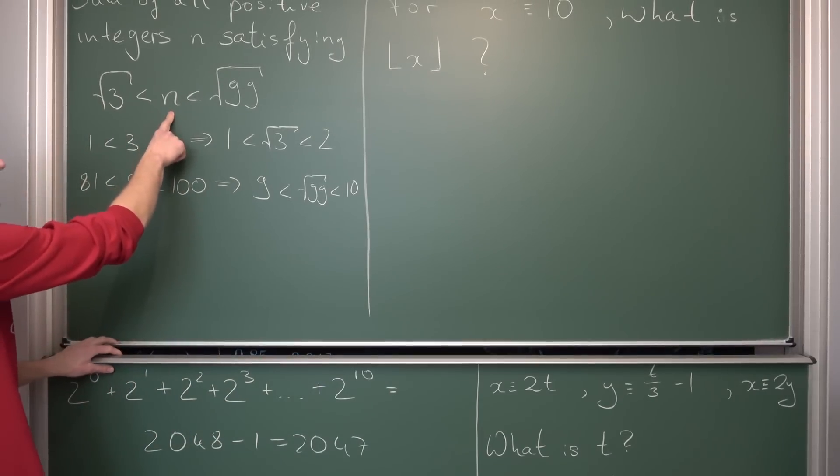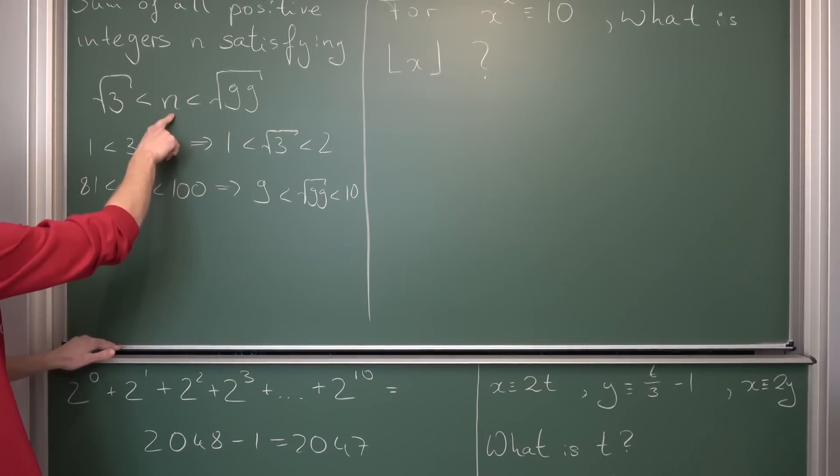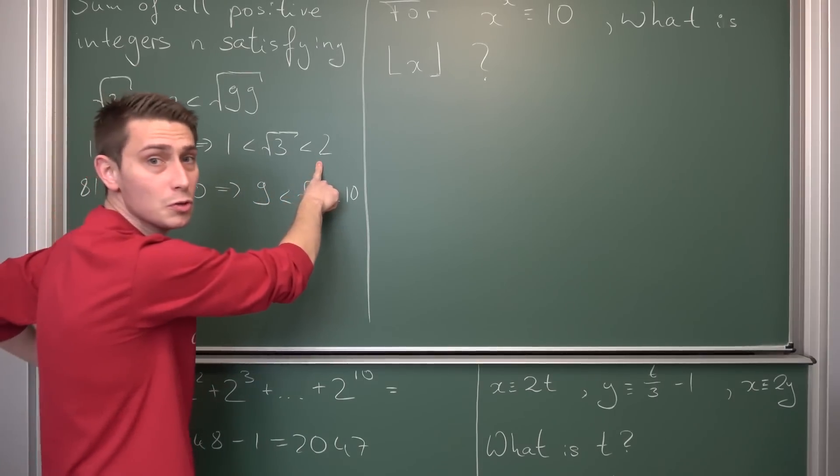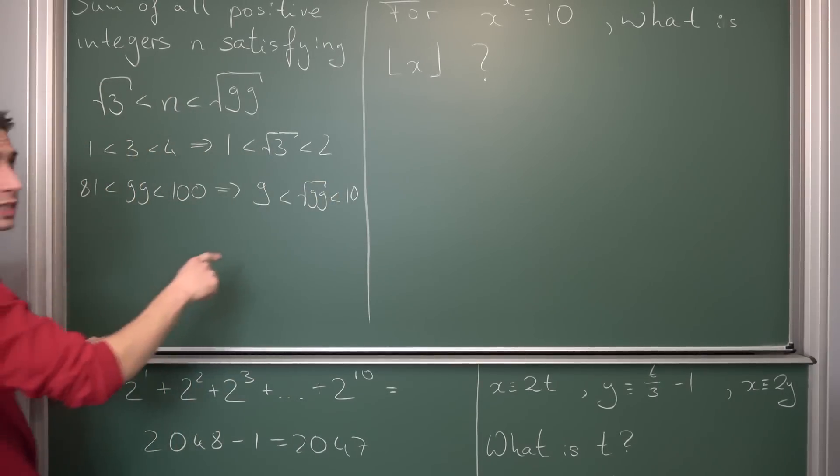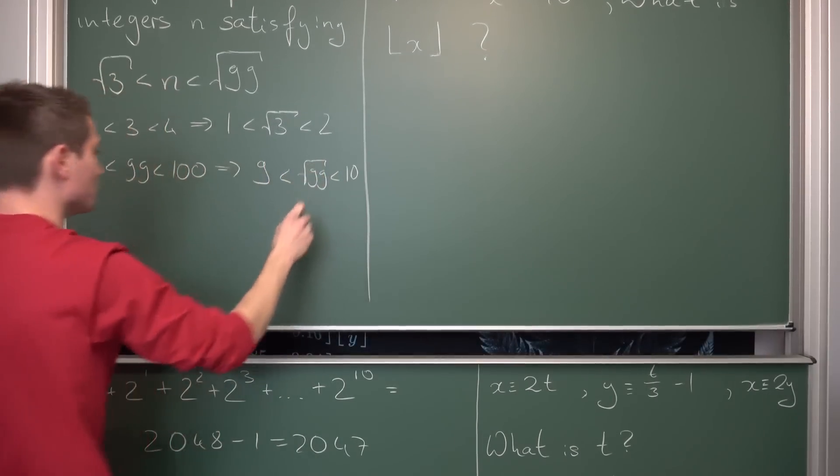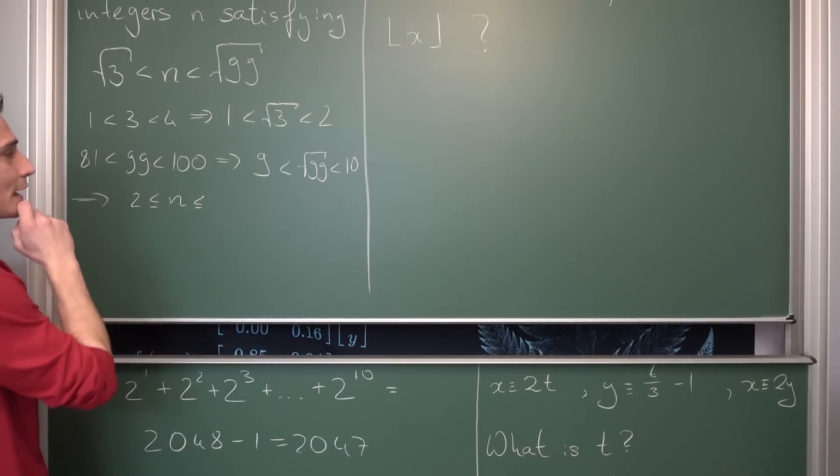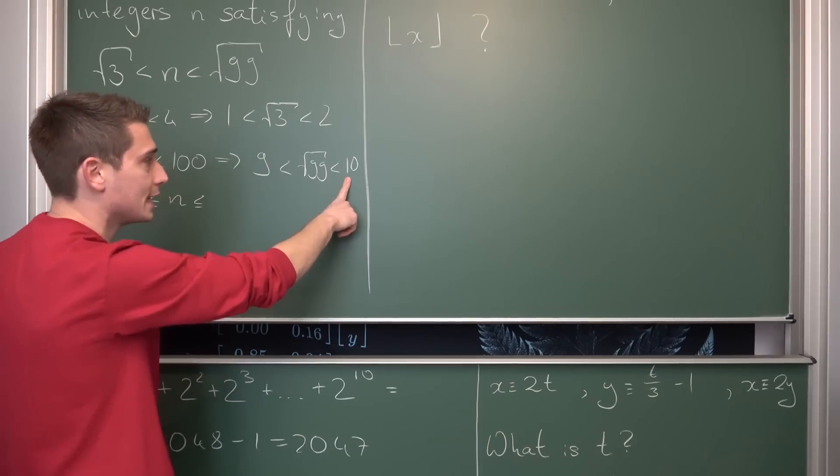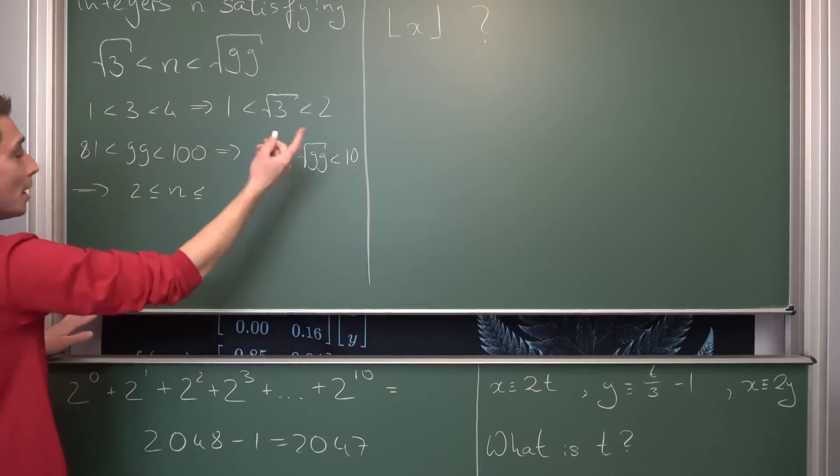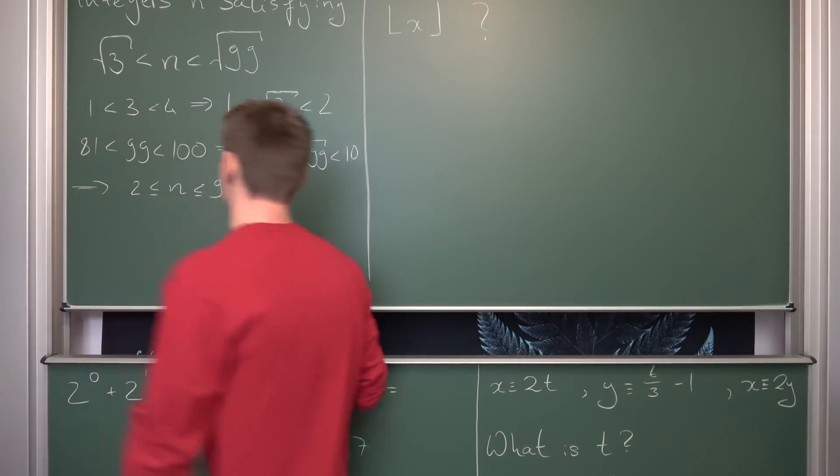Meaning overall n is thus bounded between, n can be equal to 2 because n is strictly greater than square root of 3, meaning it could also be 2. So n is greater or equal to 2, which is less or equal to, I mean it can't be 10 because 10 is already greater than square root of 99, but it could possibly be 9.